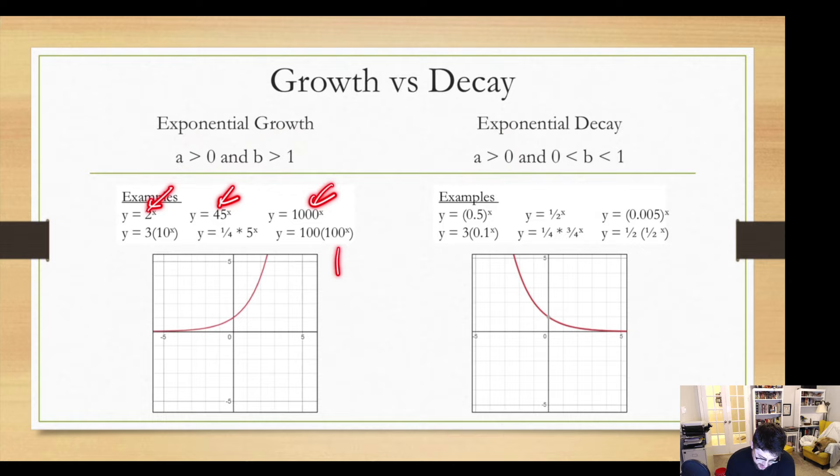So what growths are is they are where your base is bigger than 1. We are multiplied by a big number, we get bigger answers, we grow. So 2, 45, 1000, 100, 5, 10, all these things have bases that are bigger than 1. Versus decay is where it's smaller than 1. It still has to be a positive number. So what we're left with is decimals or fractions for our base.